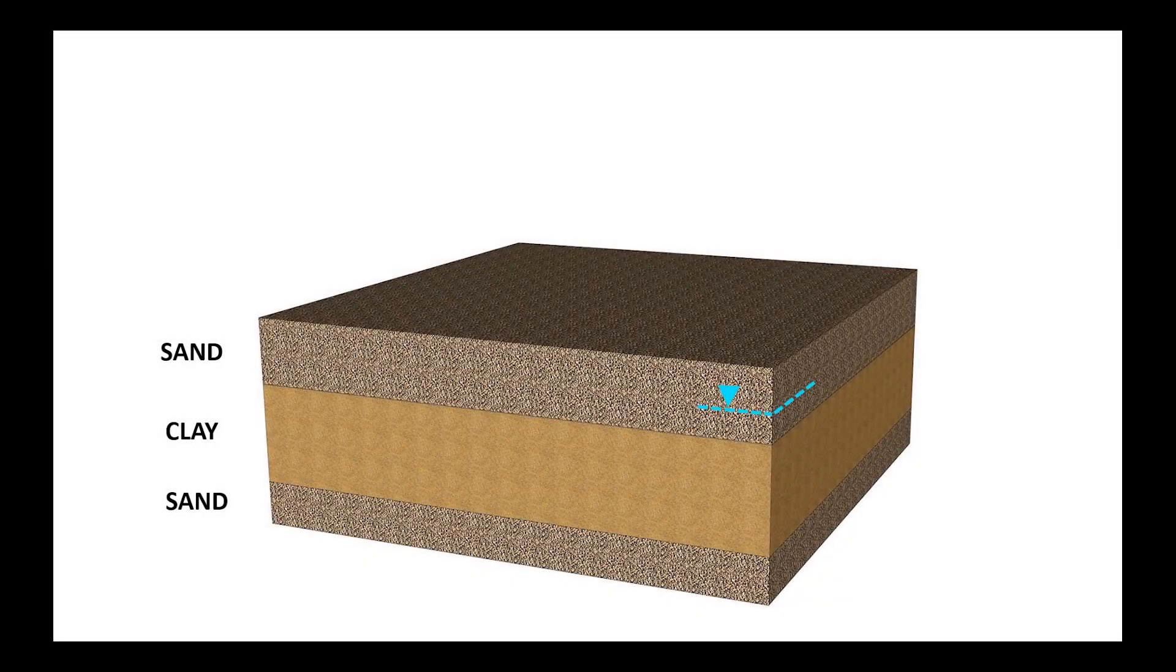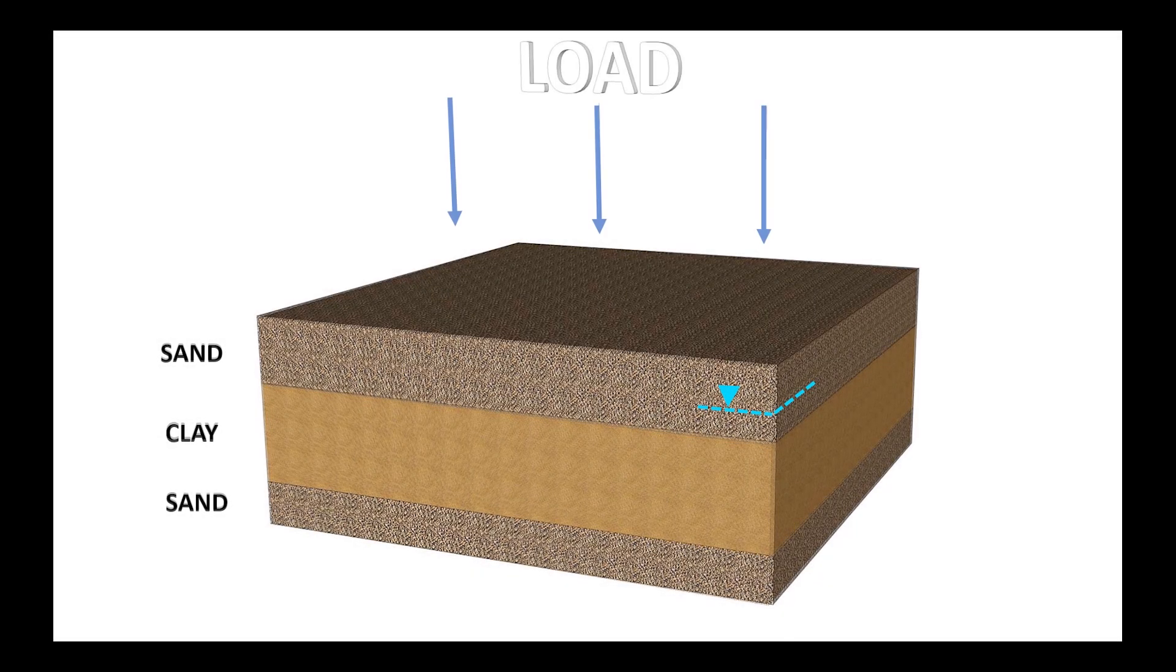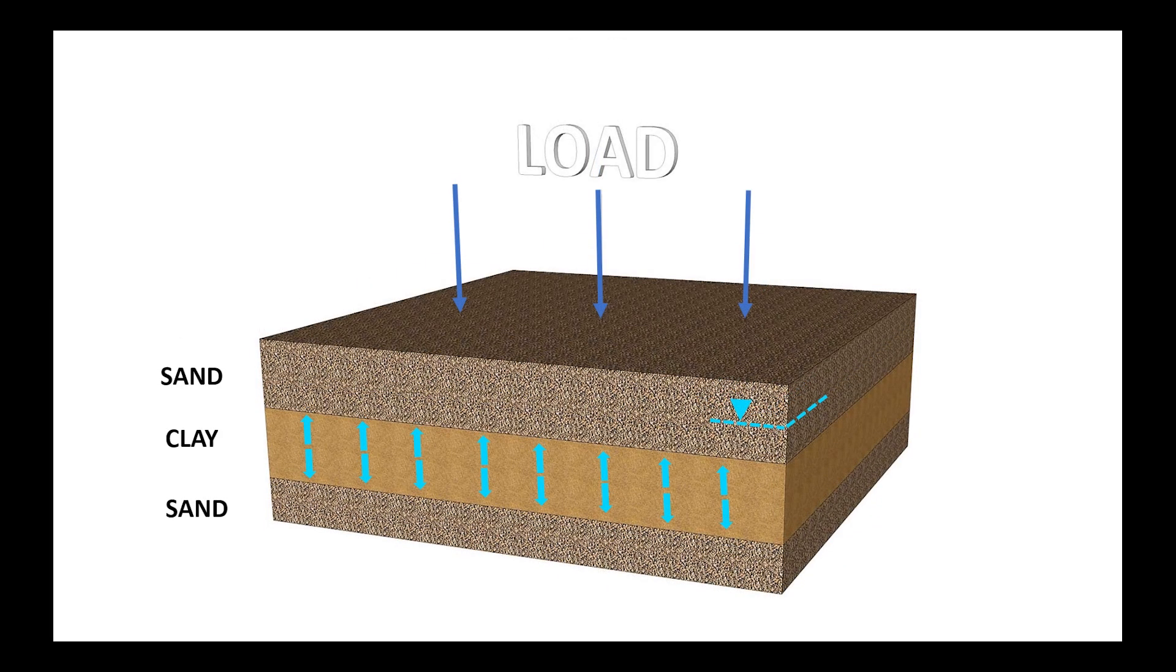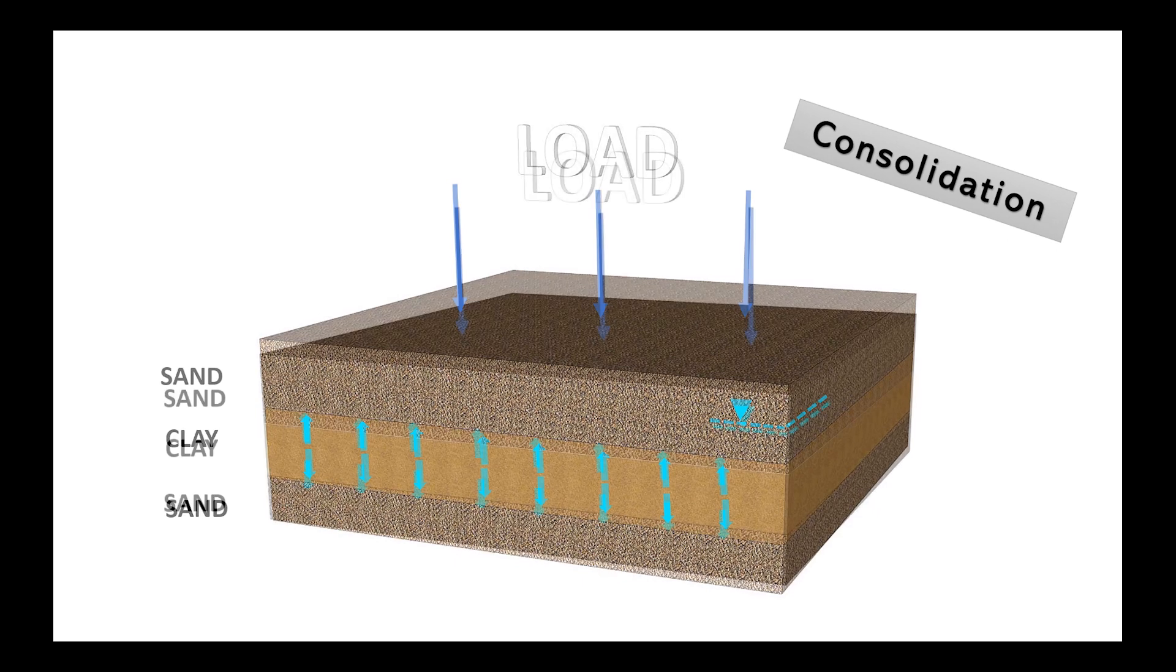The soil layers here are constantly settling due to the load transferred from the top by dissipating the excess water pressure. This getting out of water from soil layers is called consolidation, which leads to settlement.